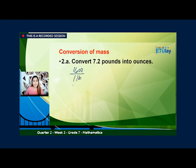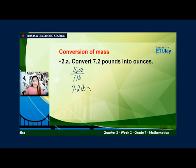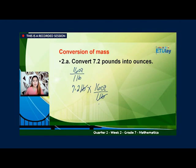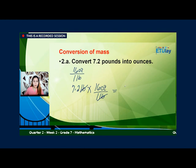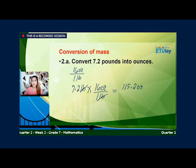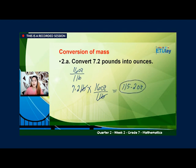So write natin as multiplication: 7.2 pounds times 16 ounces over 1 pound. Then eliminate natin yung same unit sa numerator and denominator. Ang matitira, 7.2 times 16, that would be 115.2 ounces over 1. So yung 1 as denominator, hindi na natin kailangan pang isulat. So therefore, this one is our final answer — 115.2 ounces.